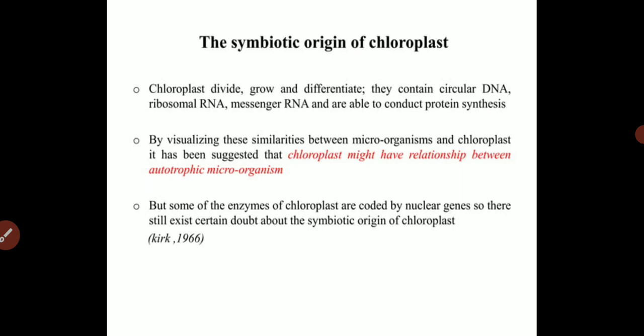Chloroplasts are called semi-autonomous organelles because some important enzymes and proteins are synthesized by the nuclear genome — their gene information is not present in the chloroplast but originates from the nuclear genome. This is why the concept of symbiotic origin is still under doubt, and both symbiotic and non-symbiotic origin confirmations exist for chloroplast.